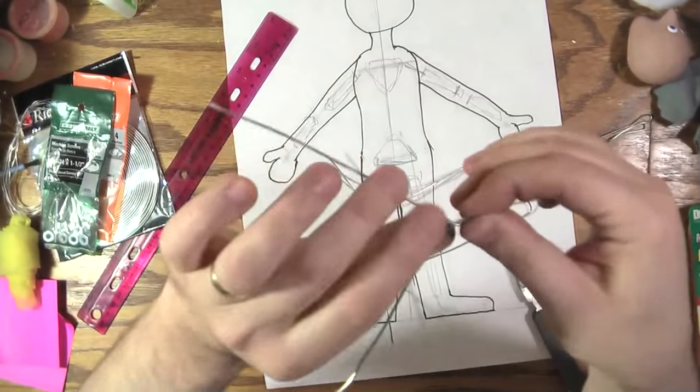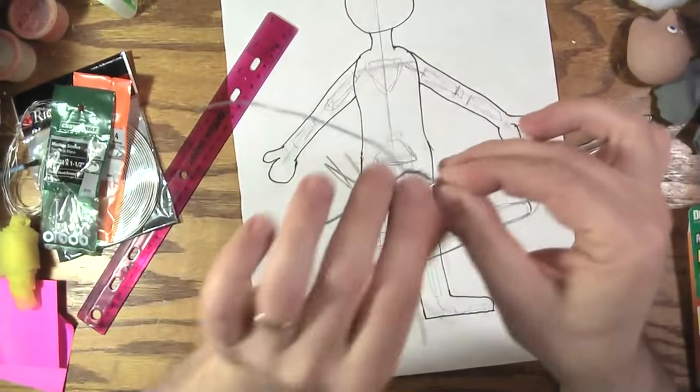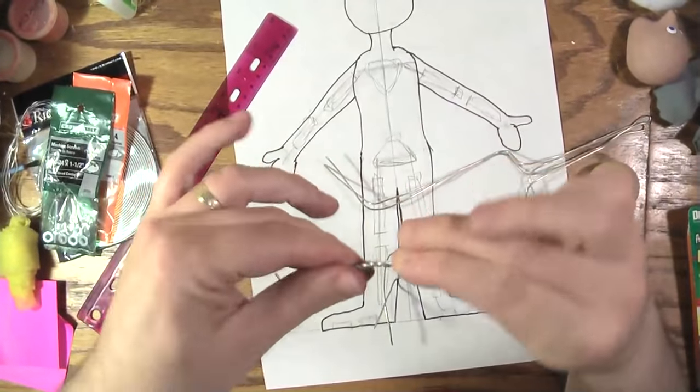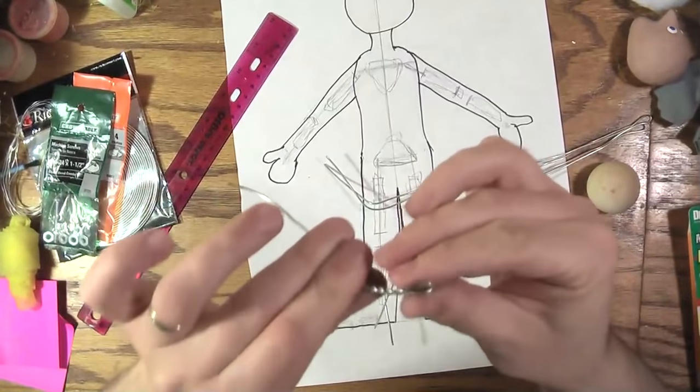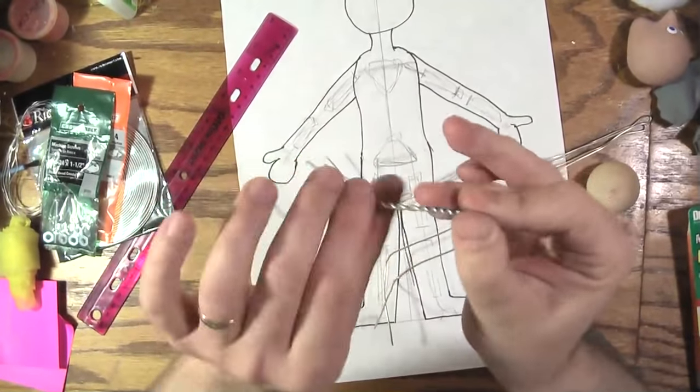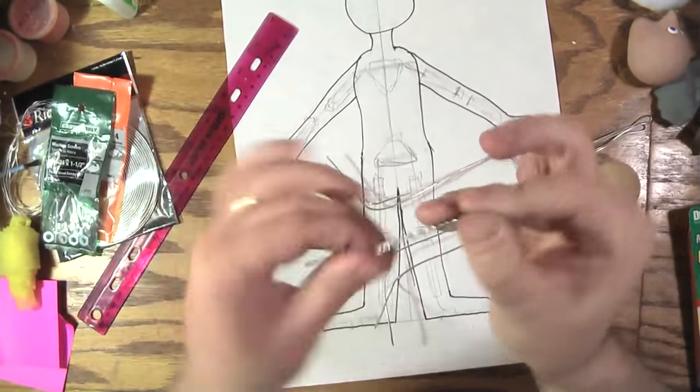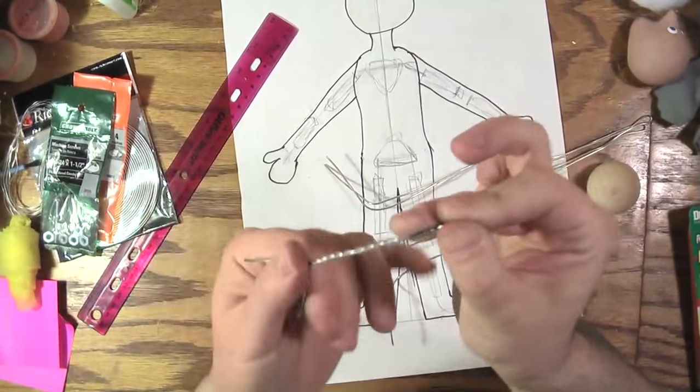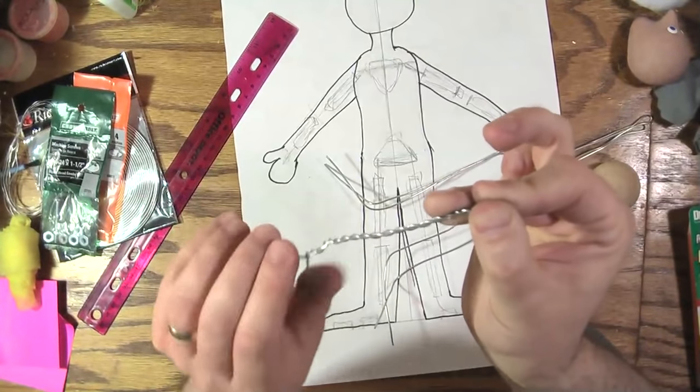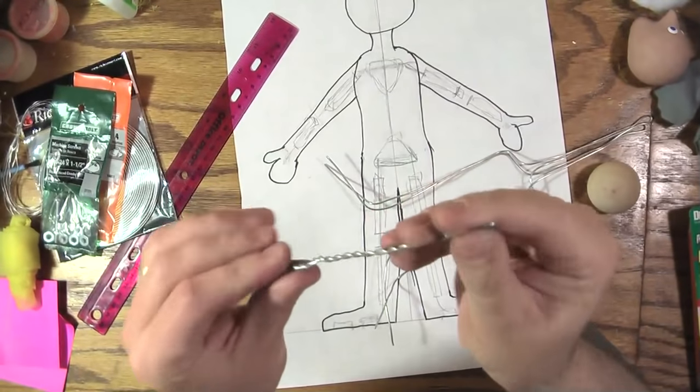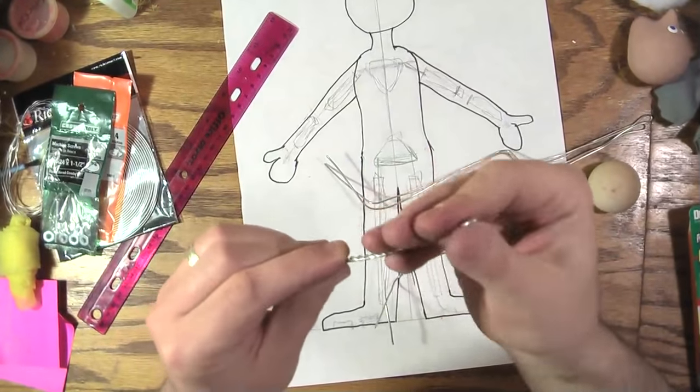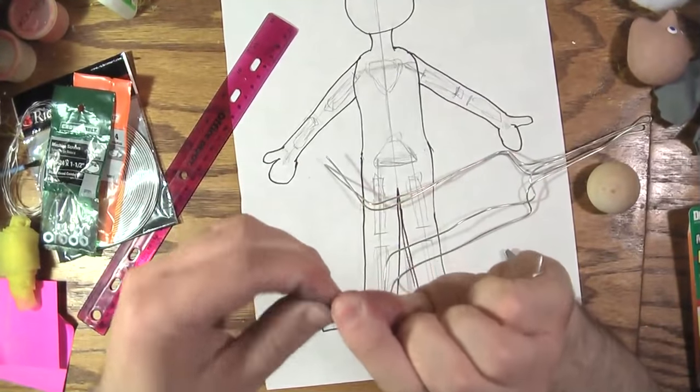Now some instructions for making a stop-motion armature is to twist the wire really tight like this for the whole armature. I'm not doing that here because this kind of weakens the wire, it'll break sooner. This is good for if there's not going to be bones holding it together, like for a tail.